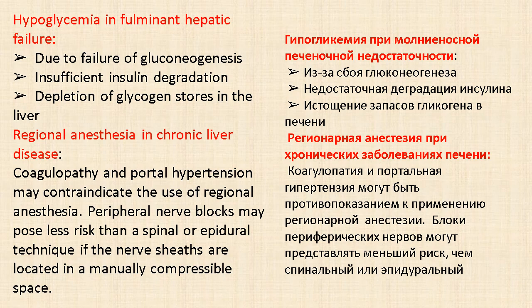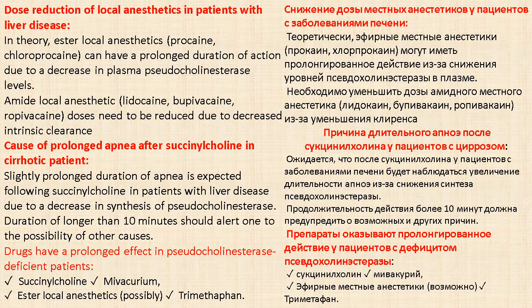Regarding regional anesthesia and chronic liver disease: coagulopathy and portal hypertension may contraindicate the use of regional anesthesia. Peripheral nerve blocks may pose less risk than spinal or epidural techniques if the nerve sheaths are located in a manually compressible space. Dose reduction of local anesthetics in patients with liver disease must be considered.